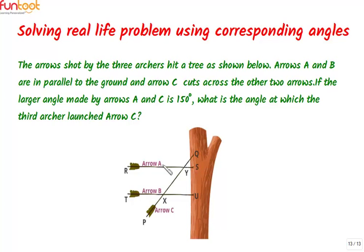Also given in the question is the larger angle between arrow A and arrow C is 150 degrees. What we have to find in this question is: What is the angle at which the third archer launched arrow C?